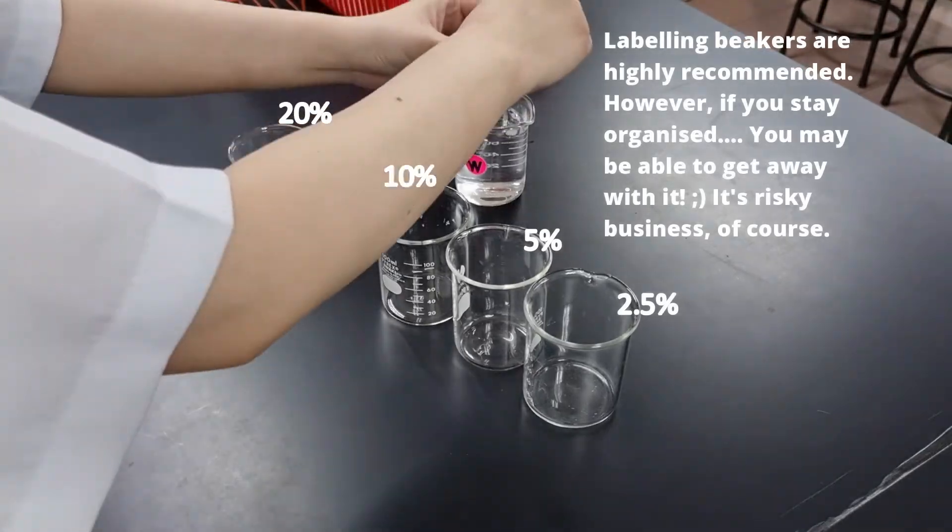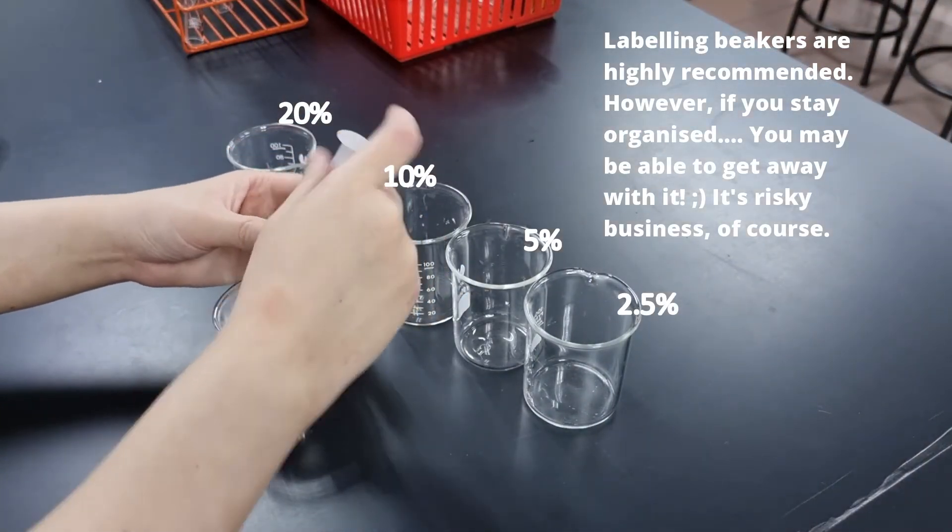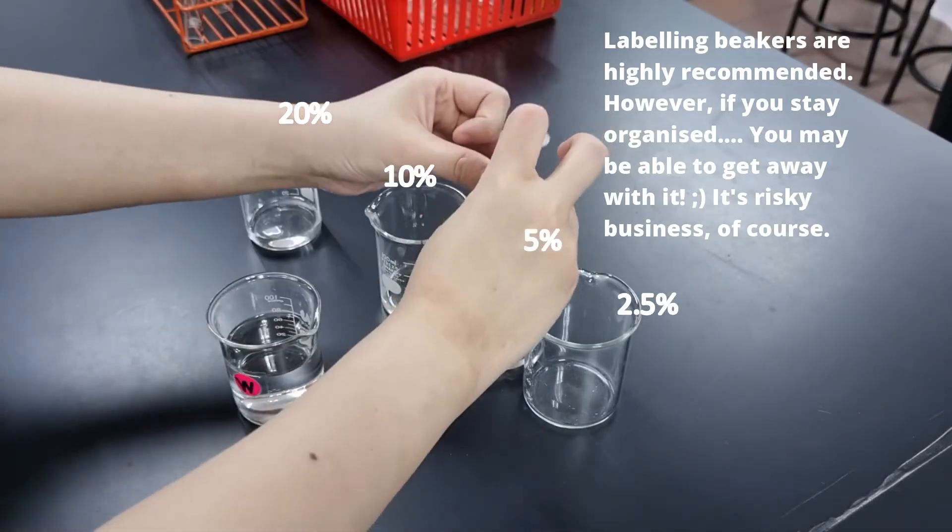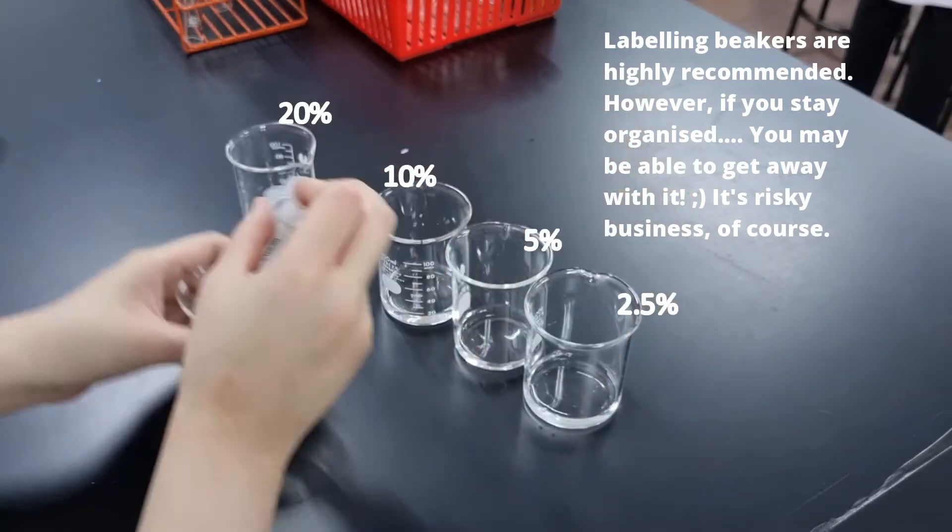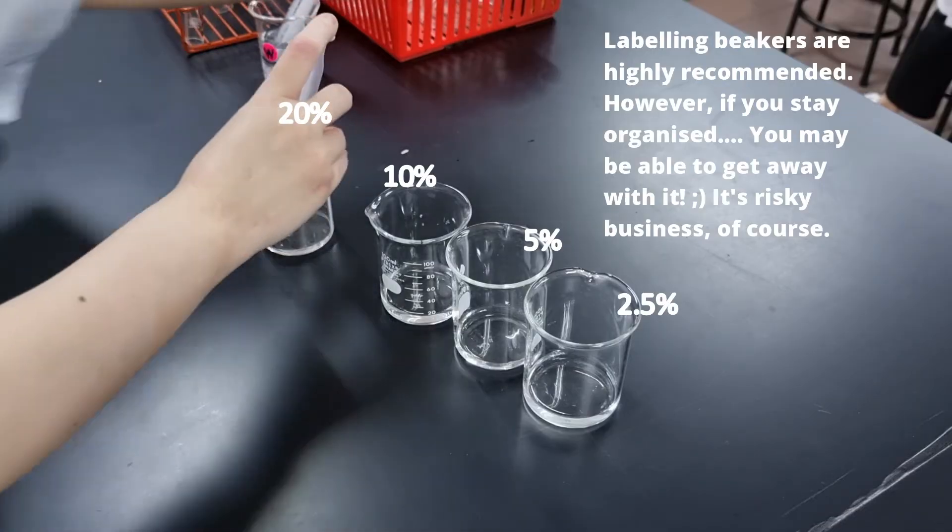All right, with the calculations done, we can finally perform the experiment in real life. I like to start with placing the same amount of distilled water in every beaker. So this is me putting 10 cm cubed of water in every beaker, and then start the serial dilution process.